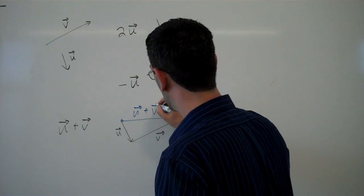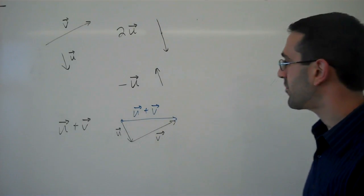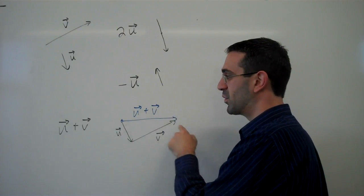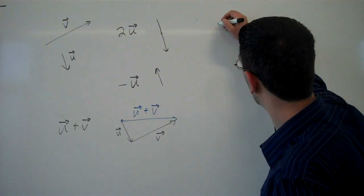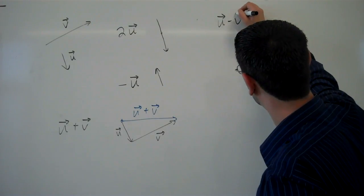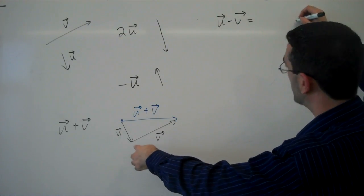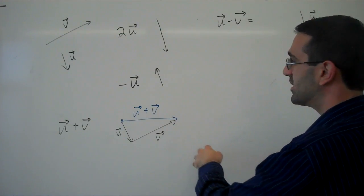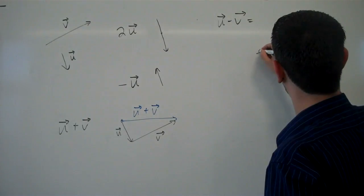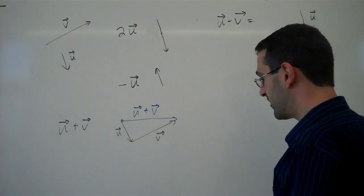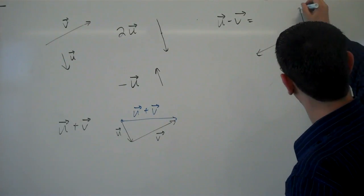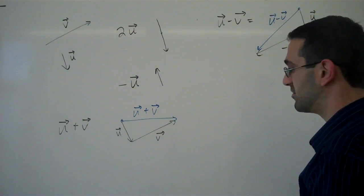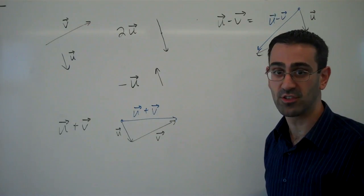Now we can subtract vectors by combining our scaling with our sums. If I want to find u minus v, I can take the vector u and combine it with the opposite of v. I can draw a negative v vector, and then from the start of the first to the end of the second would be the vector u minus v. And so we can subtract vectors that way.